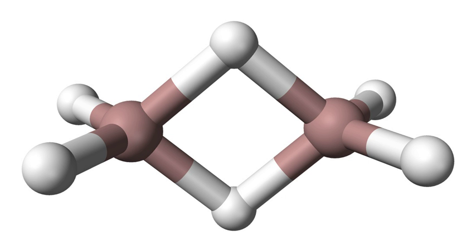The terminal Ga-H bond length is 152 pm, the Ga-H bridging is 171 pm, and the Ga-H-Ga angle is 98 degrees. The Ga-Ga distance is 258 pm.